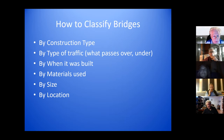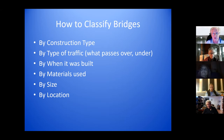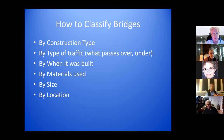So how do we classify bridges? One common way is by construction type, which I'll get into in more detail. Another way is by the traffic — so there are highway bridges, railroad bridges, pedestrian bridges. Another way is when it was built, because I'll show you some very old bridges. By the material used — a steel bridge, a concrete bridge, timber bridge, and so on. And then by size and by location.